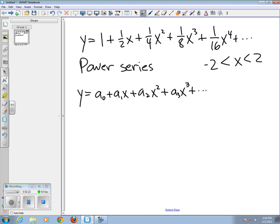So if we were looking at our specific power series, things match up. a0 for our power series would be 1, a1 would be 1 half, a2 would be 1 fourth and so on.